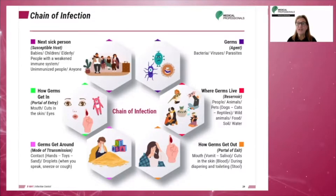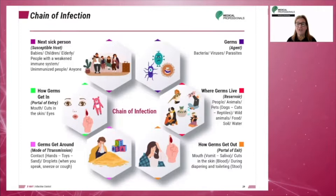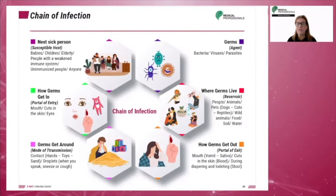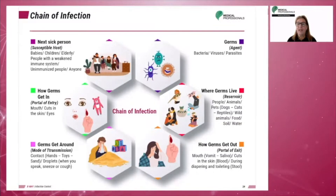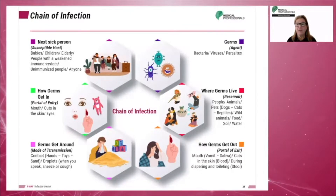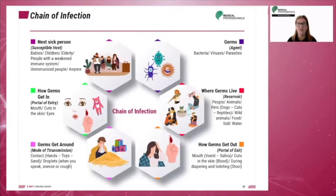An infection can enter the host by endogenous or exogenous methods. Endogenous infections are those that originate from within a host, such as spore formation in an organism, tissue, or cell. Exogenous infections originate from outside of the host — for example, an encounter with a microbe in the environment, either through direct or indirect transmission.